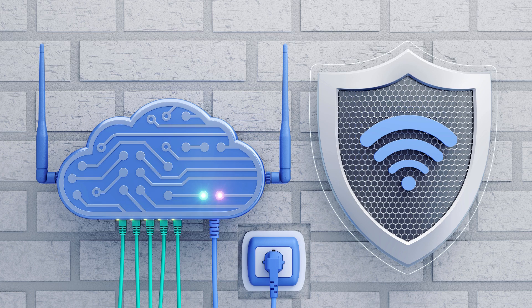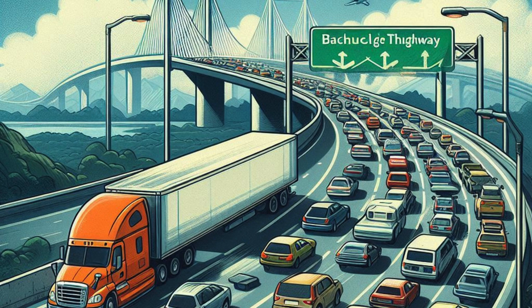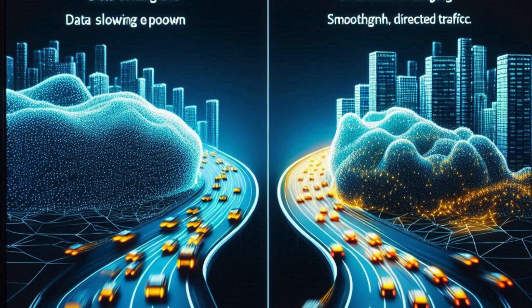Reliable Data Transmission — TCP ensures that data sent over the internet arrives accurately and in the correct order, making it reliable for critical applications like web browsing, email, and file transfers.